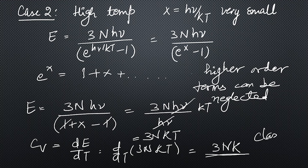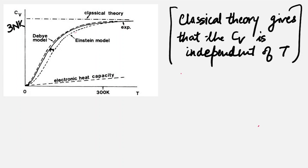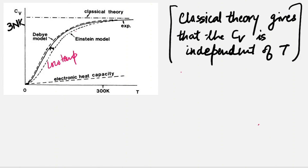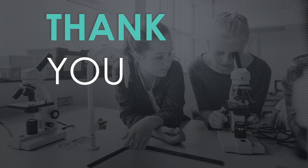Looking at the plot, we can see that the Einstein model shows temperature-dependent variation at low temperatures and converges to the classical value at high temperatures. However, the solid line representing the experimental plot shows a slight deviation from the Einstein model at lower temperature ranges. We will address this deviation using the Debye model in the next video. If you have any doubts, please comment. If you like this video, please like, share, and subscribe.